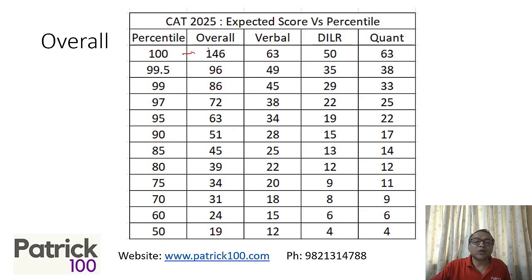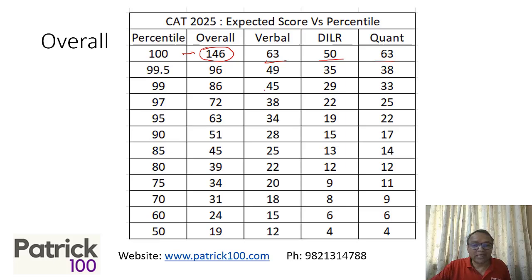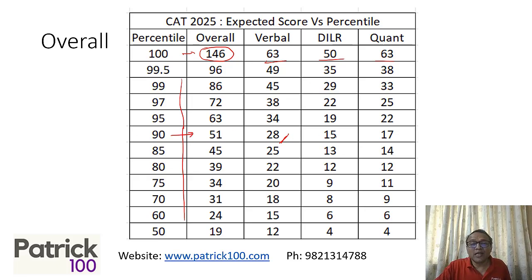If I am saying 100 percentile could be at 146 overall, and the sections are verbal, DLR, and CON. Last year, DLR went to about 60, so expecting it to go down. At 98 percentile, verbal would be 28, DLR 98 percentile would be 15, and CON would be 17.